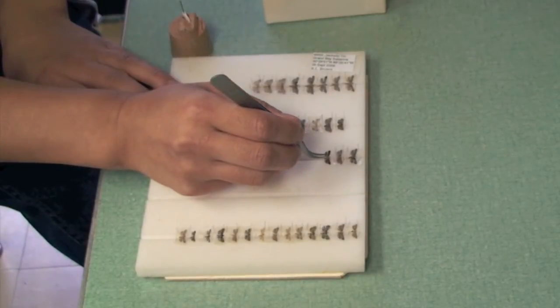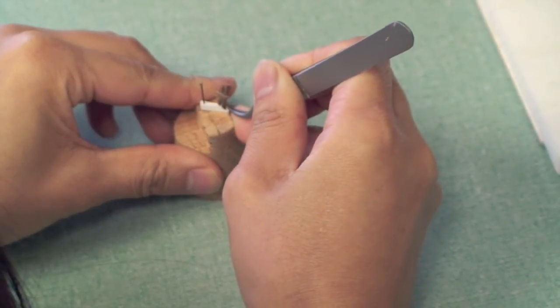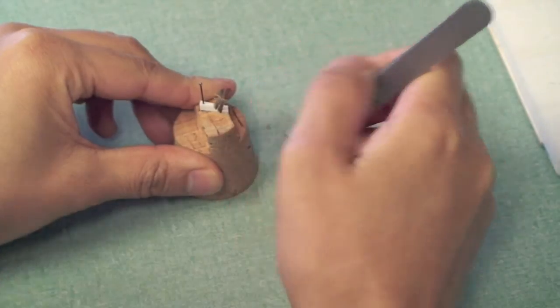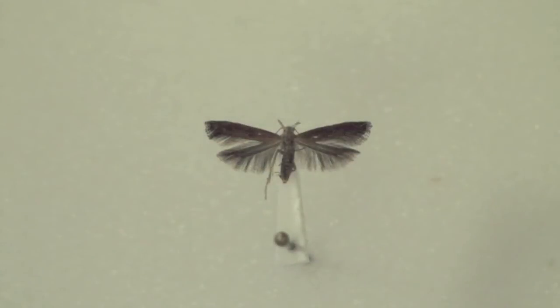The pinned specimen can now be double mounted on a strip of silicon rubber that's cut diagonally from a square strip so that it's triangular in shape. The specimen is now ready for labeling.